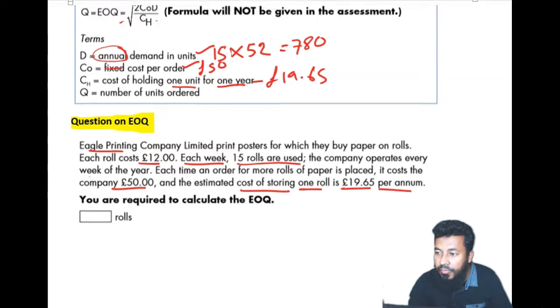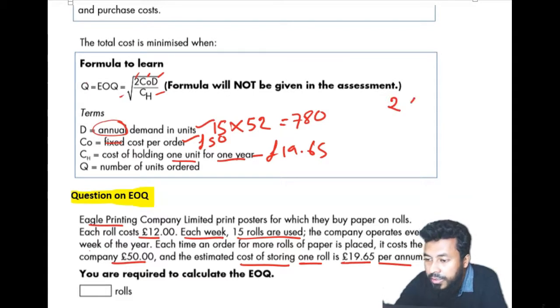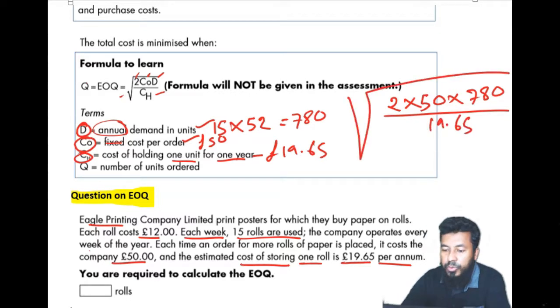So let's go back to our formula. 2 times CO times D over CH. CH is 19.65. And you get the root over.